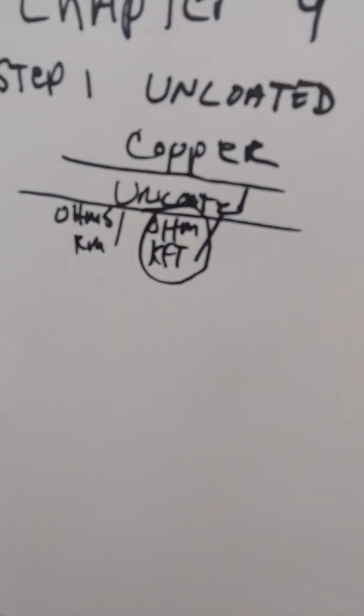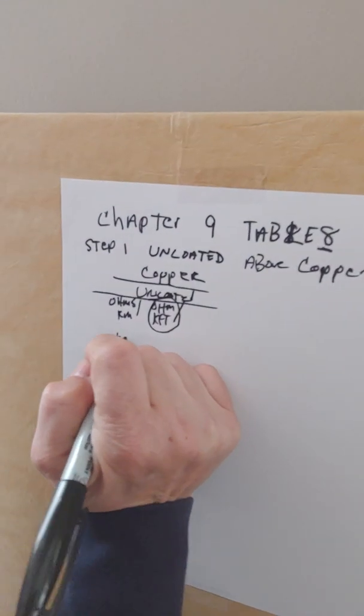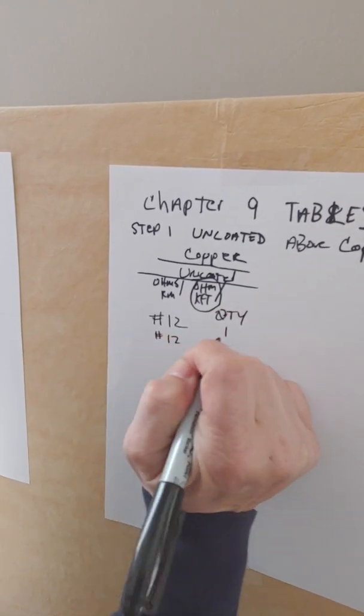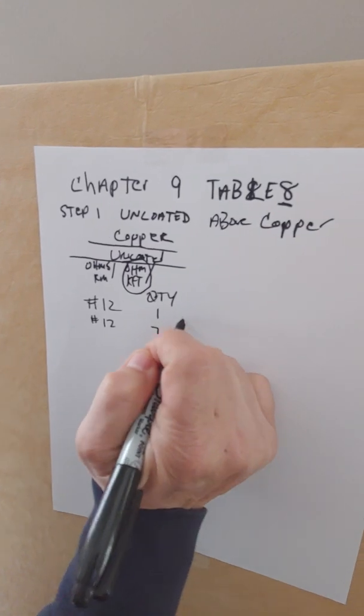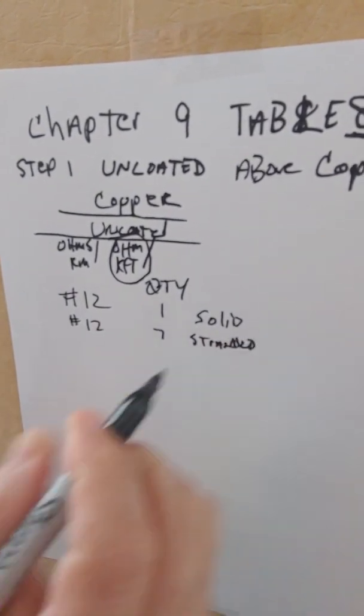We go to a number 12, and if everybody looks right here you're going to see my finger at number 12 wire. You see the AWG right there. We go to 12 and you see the quantity, one and seven. The number 12 with quantity one means solid, and the number 12 with seven means stranded.